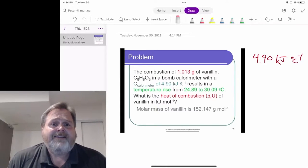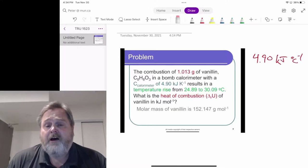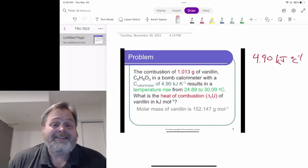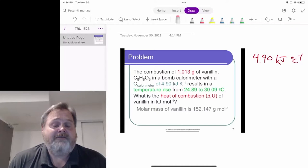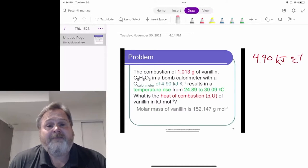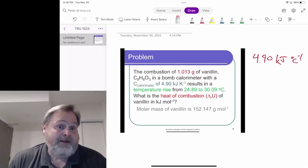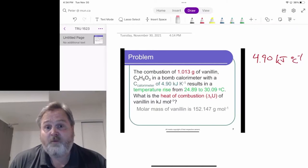Now, you can tell this calorimeter probably has a whole lot of water in it. My guess is at least a kilogram of it because we would see that a gram of water requires 4.2 joules of energy to raise it one degree. And here we're talking about 4.9 kilojoules. That means we probably got about 1,000 grams of water plus the other bits and pieces in the calorimeter.